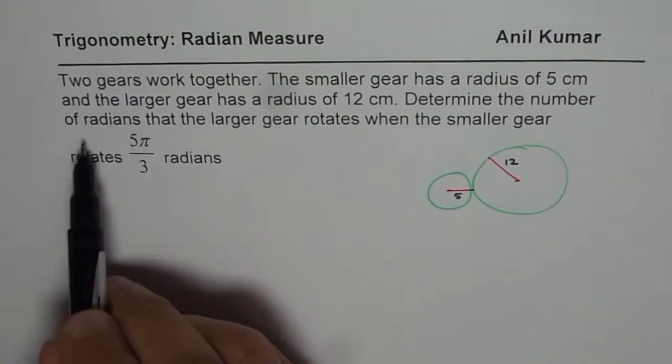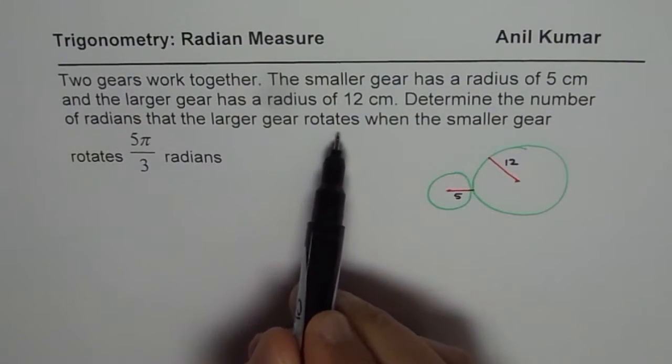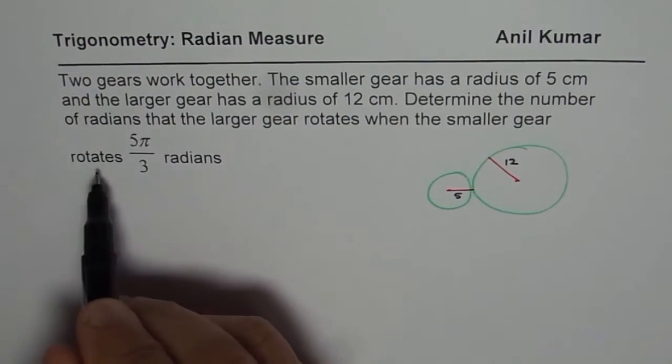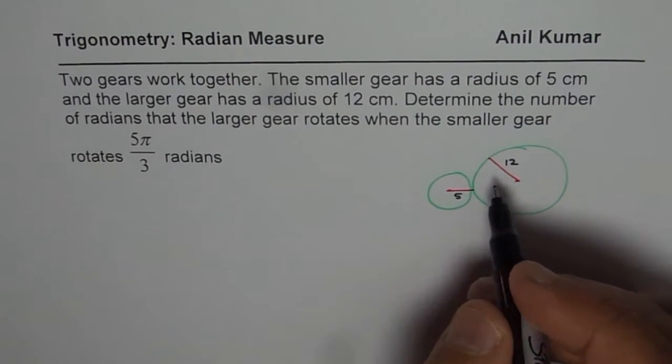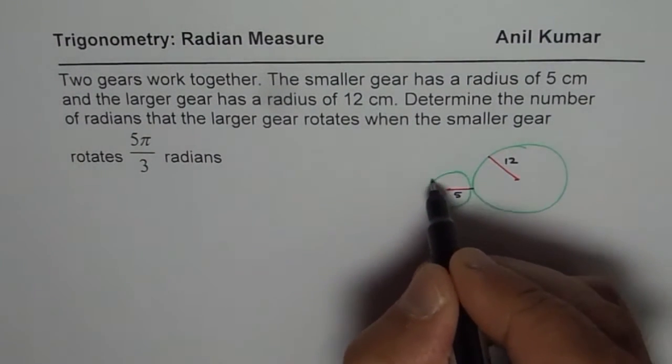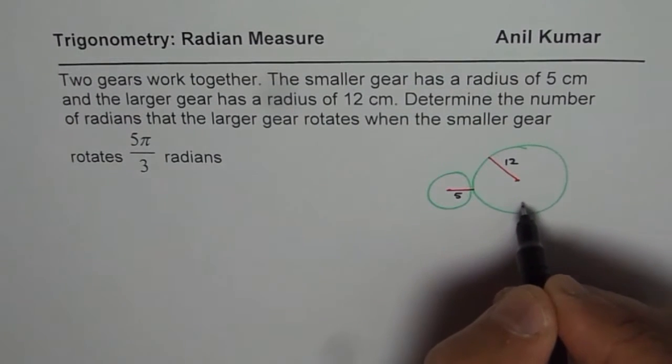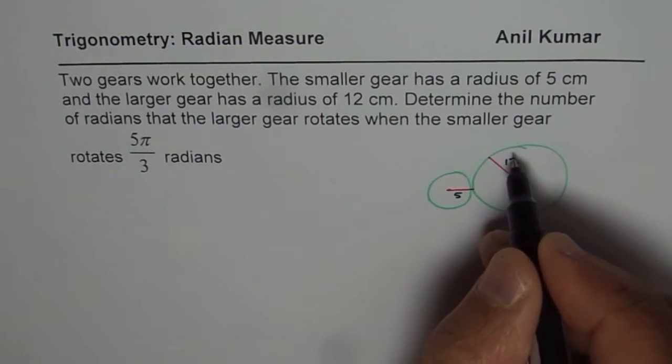Now it says, determine the number of radians that the larger gear rotates when the smaller gear rotates 5π/3. So 5π/3 is the rotation for the smaller one. Now in that case, how much will the larger one rotate?